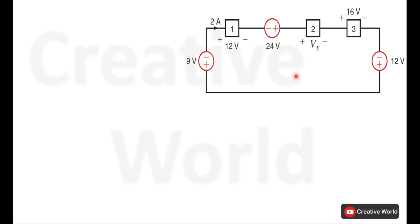This is figure 1.40. We have to calculate the value of voltage Vx across element 2 with the help of intelligence theorem. Before applying intelligence theorem, we have to identify and calculate all supplied and consumed powers in this network.